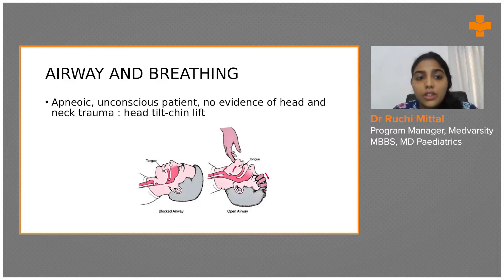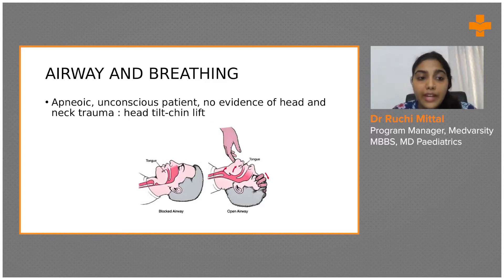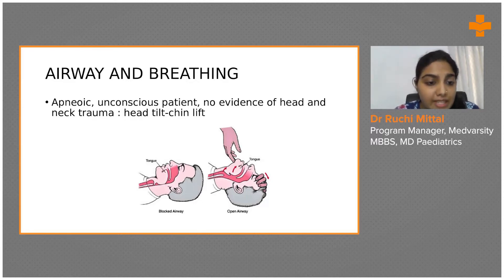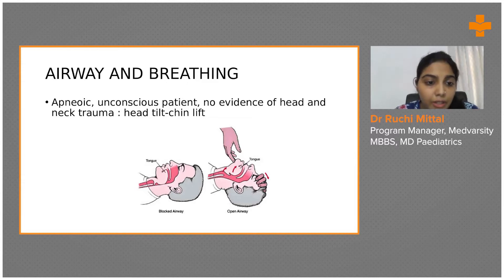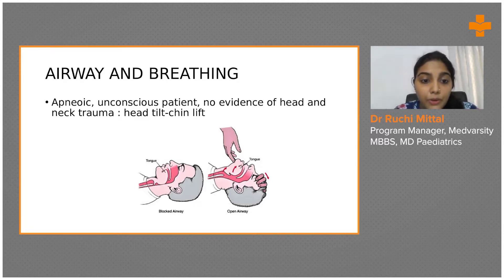Coming to airway first — the head tilt chin lift. In a patient who is apneic and unconscious with no evidence of head and neck trauma, you can perform the head tilt and chin lift maneuver. We do this to keep the airway open. In the normal supine position, the narrowest part of the airway — the glottis — is completely compressed.